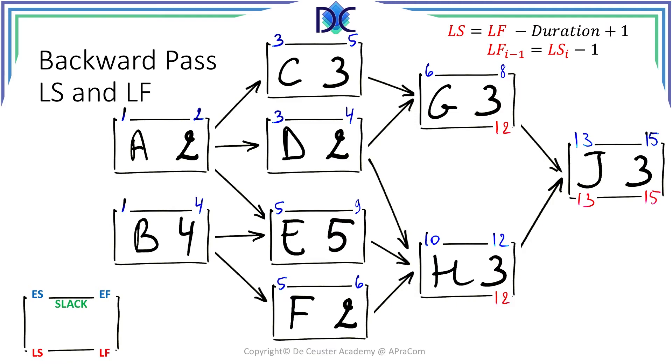We can calculate the late start by applying the formula which is 12 minus 3 plus 1 which is 10. So task G cannot start later than April the 10th. The same we can do for task H and we get the same result because they both have the same duration.